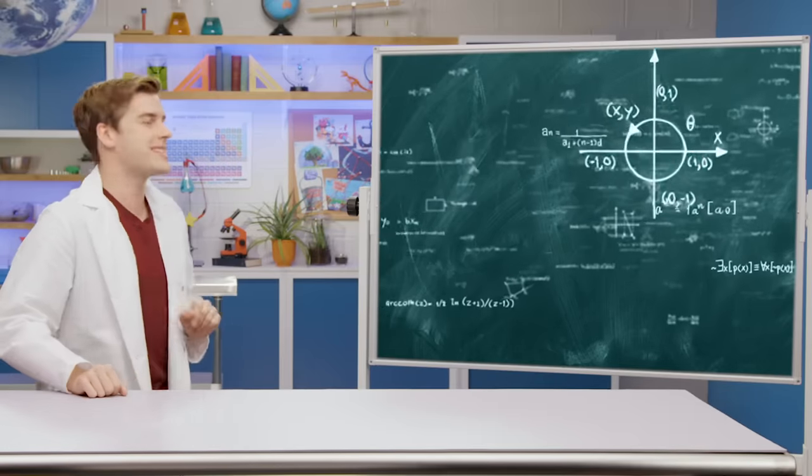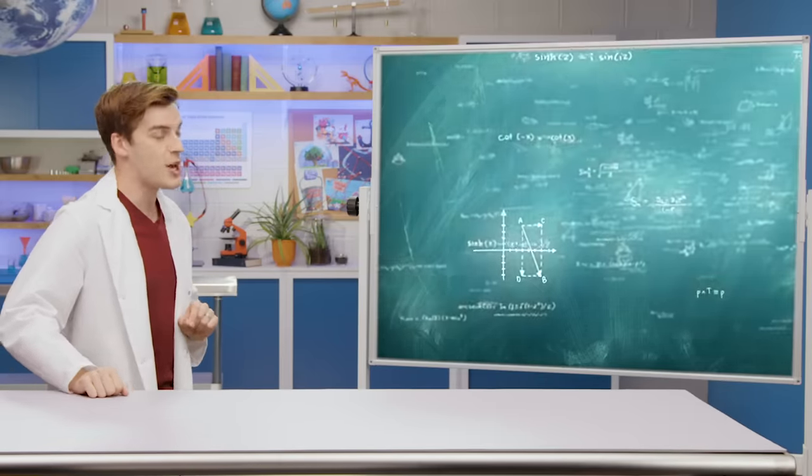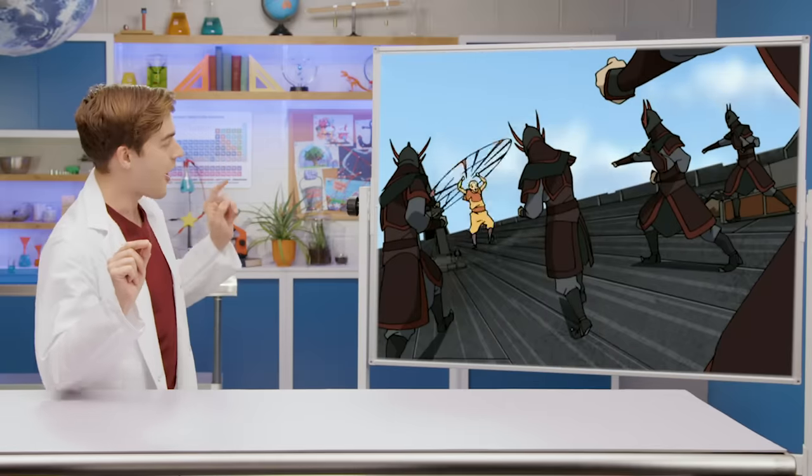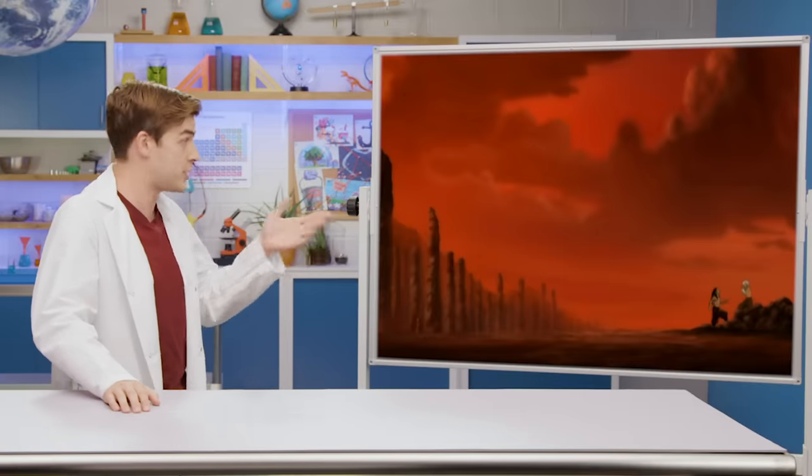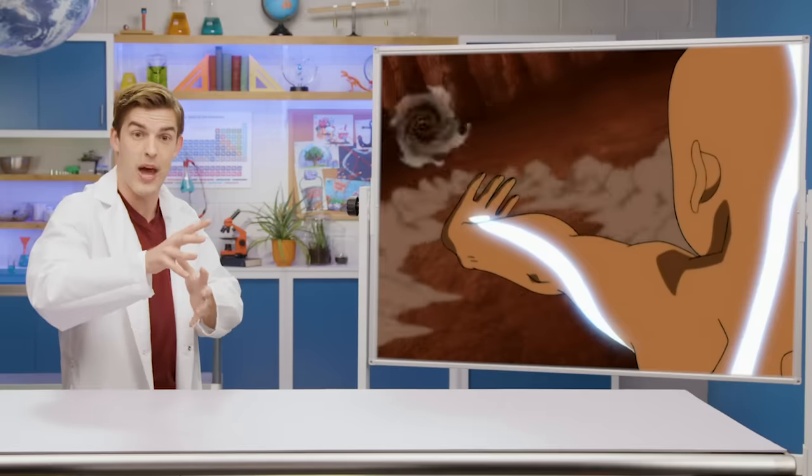So to answer this one, we're gonna need to combine our real-world science with the fictional science of airbending. The only difference between air in the real world and air in the fictional world is that in the show, air can actually be directed. It can be manipulated by the benders. So what we're here to find out today is, would that be enough to make Appa fly?